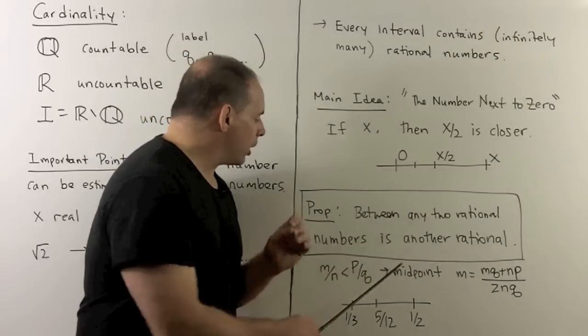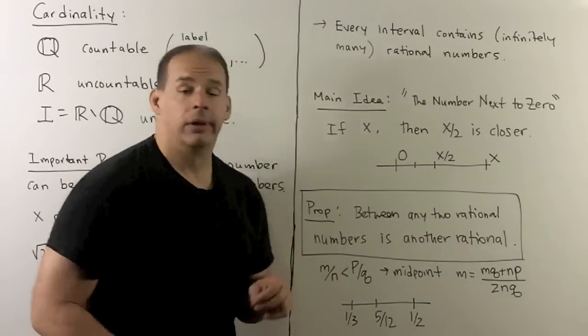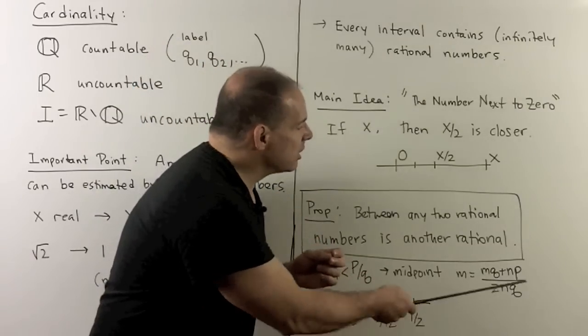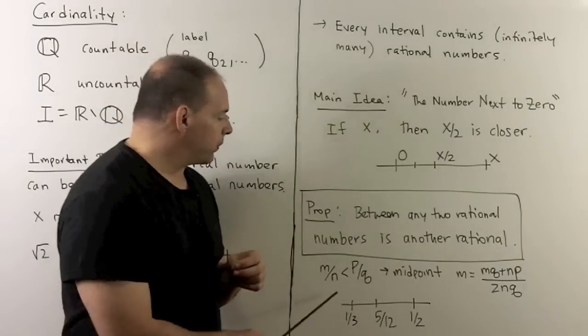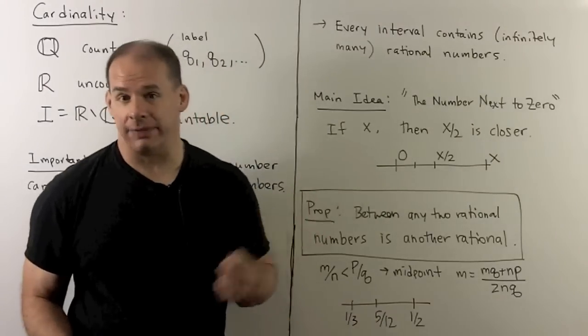Now, this is straightforward. If I have m over n less than p over q, okay, rational numbers, well, I'll just take the midpoint. So, that's given by the formula over here, and this is clearly another rational number. So, for instance, if I take one-third, one-half, the midpoint is 5 over 12, and that's definitely rational.